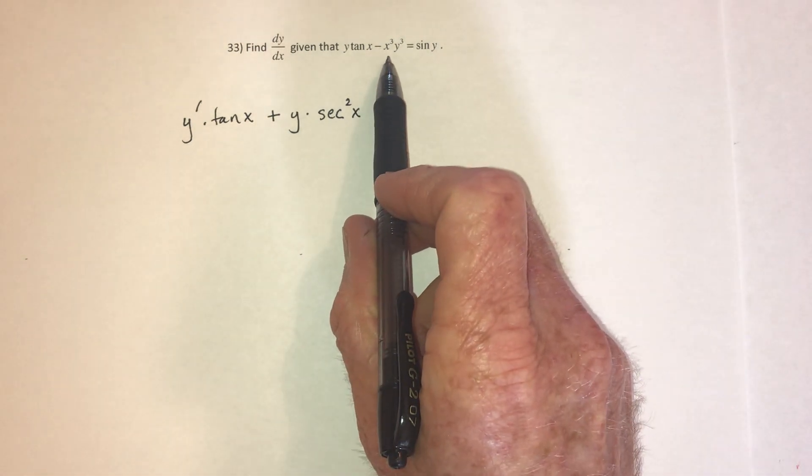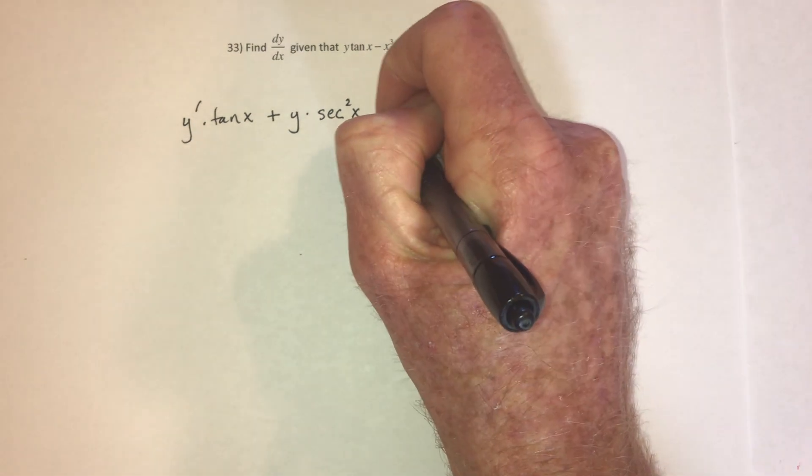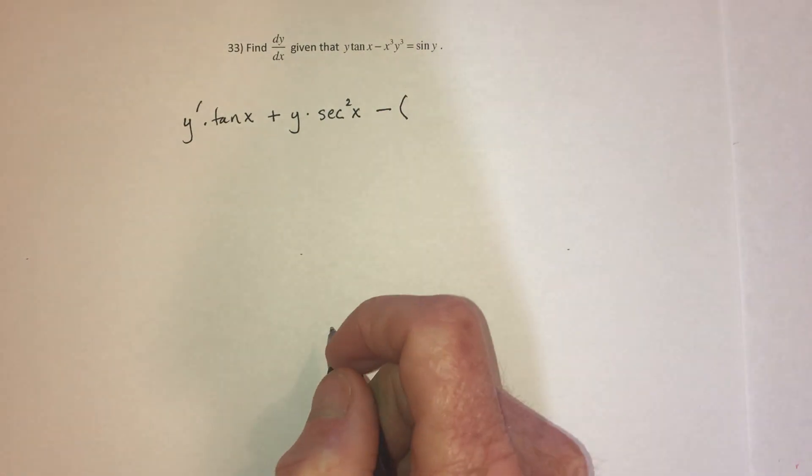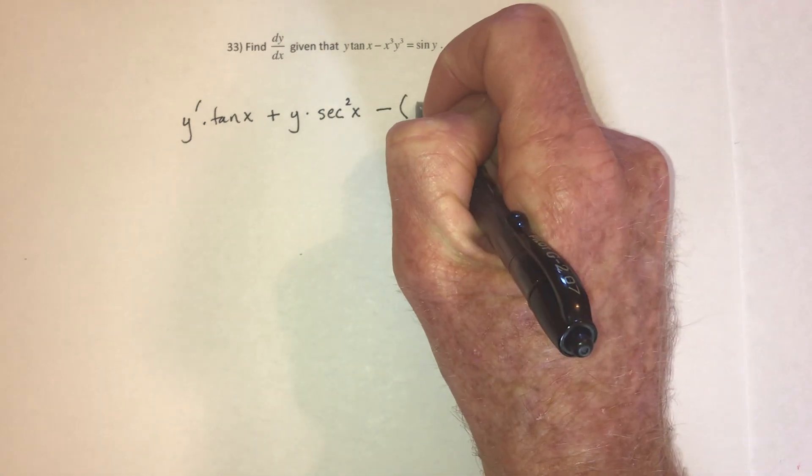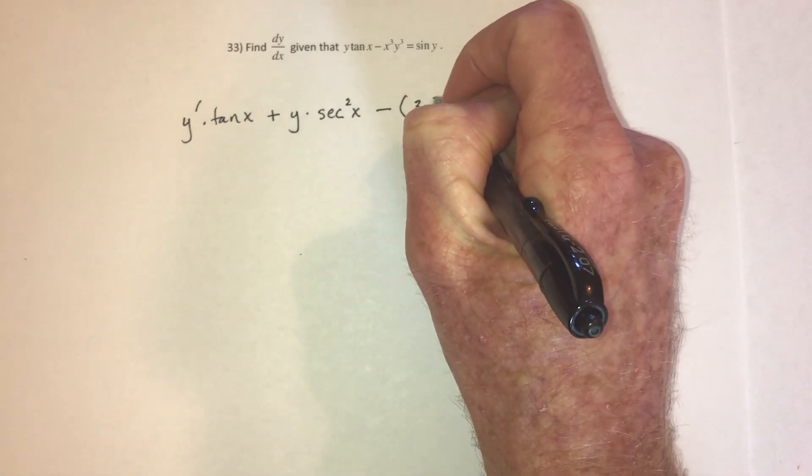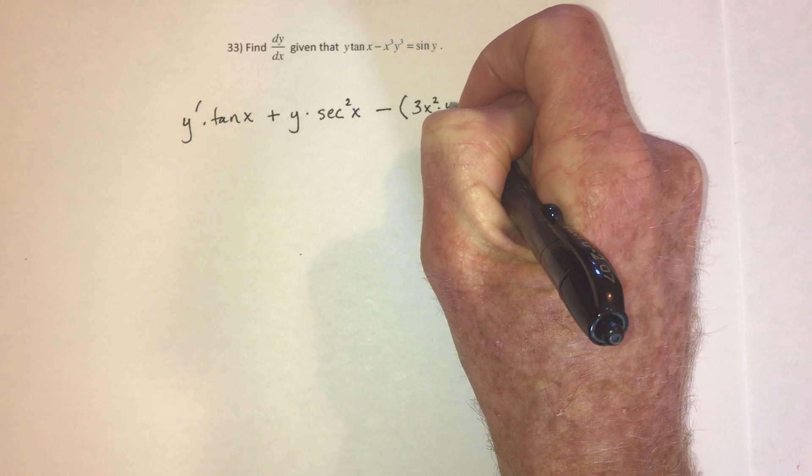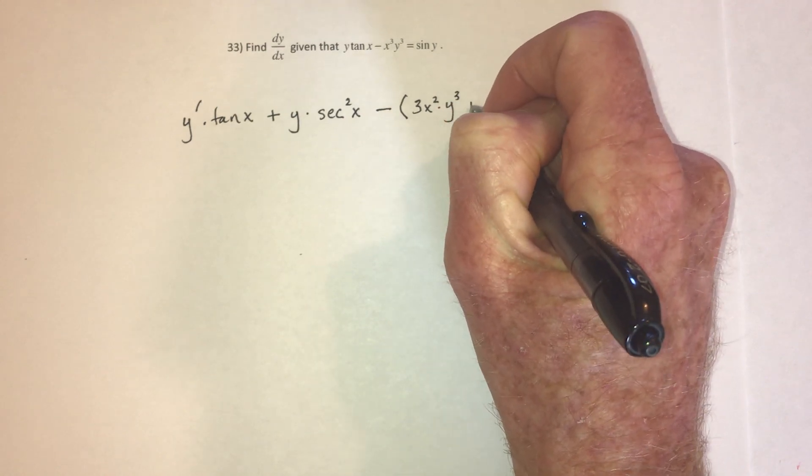Now we're ready for this part. It's got a negative in front, so I should put negative parentheses. Again with the product rule. So the derivative of x cubed is 3x squared. And then leave the y cubed alone. Plus,